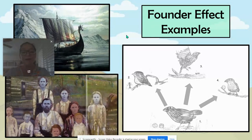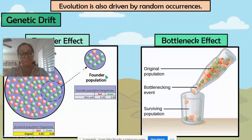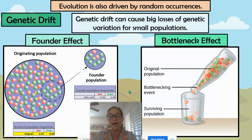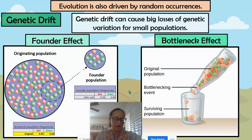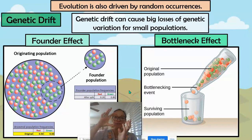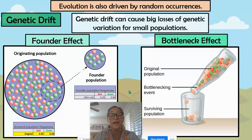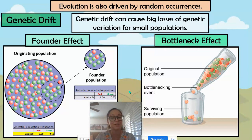The key thing about genetic drift — the founder effect and the bottleneck effect — is that they really occur in small populations where they have their biggest impact. Generally speaking, you lose variation in genetic drift. In both cases, small populations are affected greatly by genetic drift and there's a reduction in genetic variation. But again, it is random and has nothing to do with phenotypes or high or low fitness.